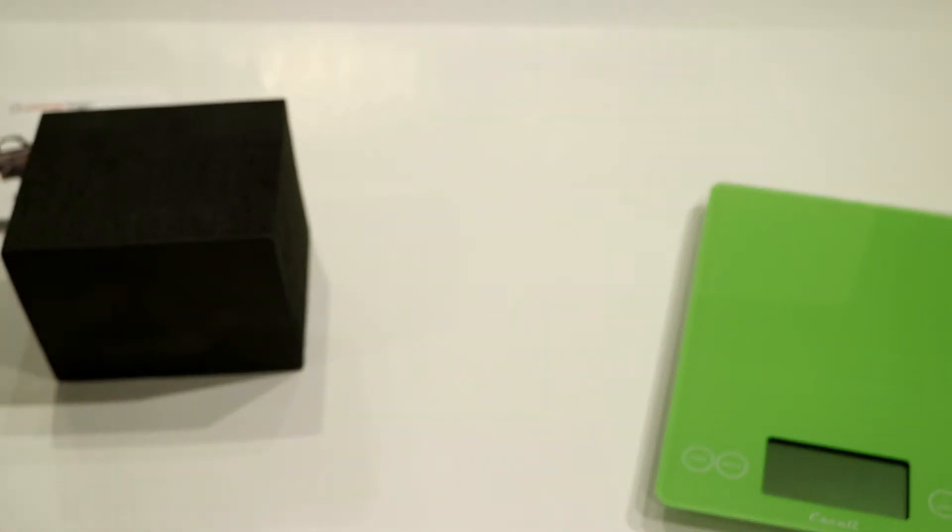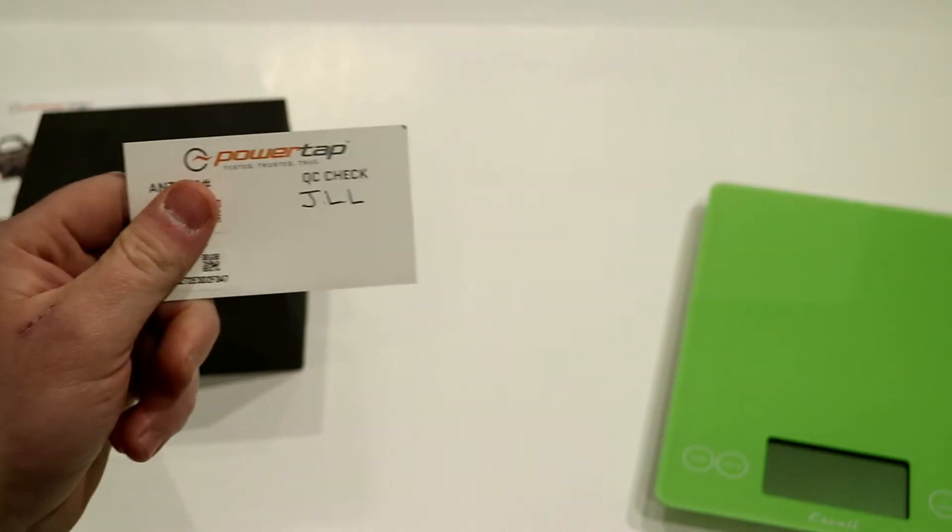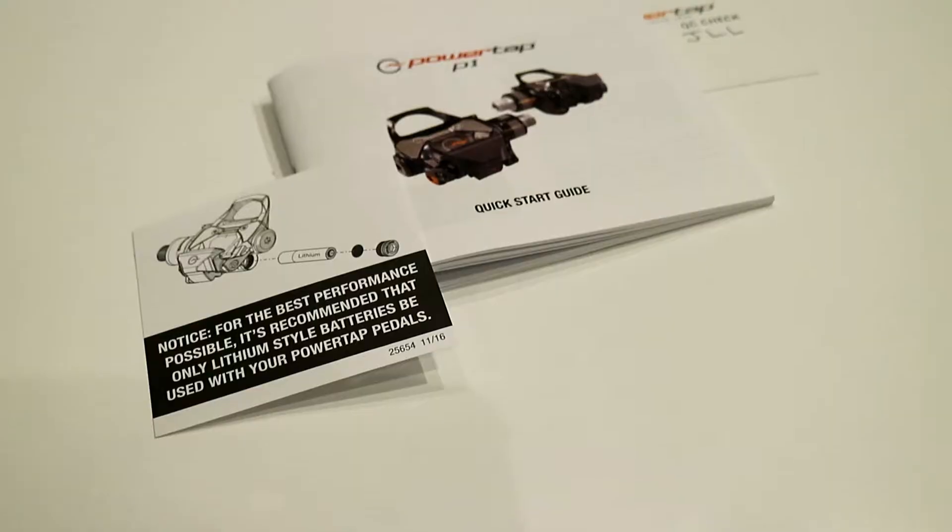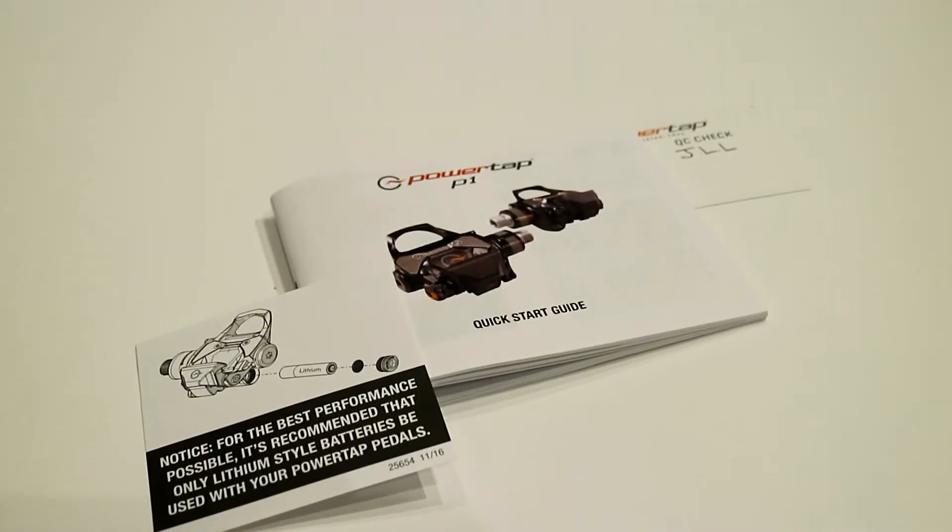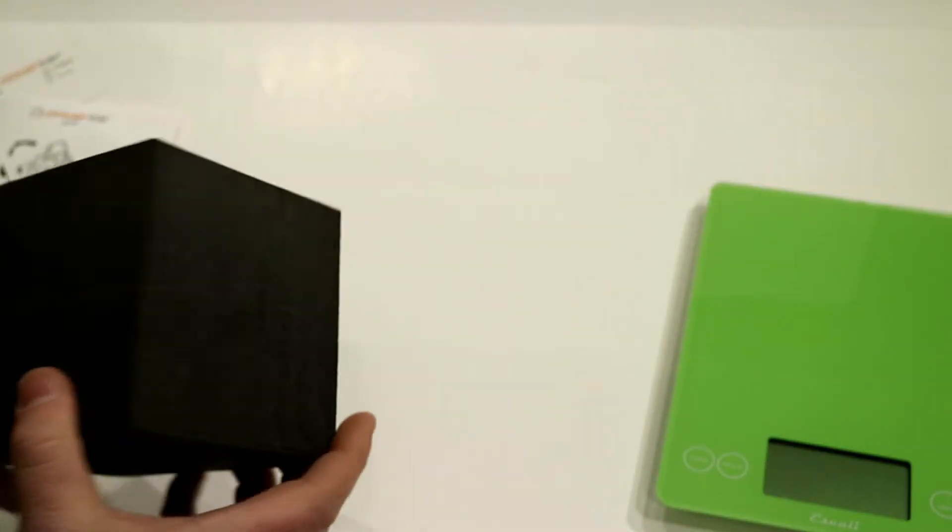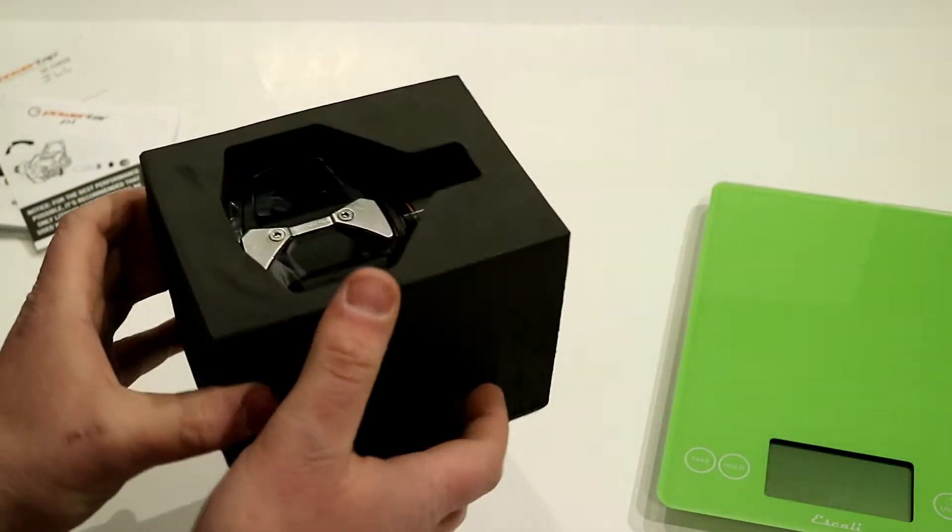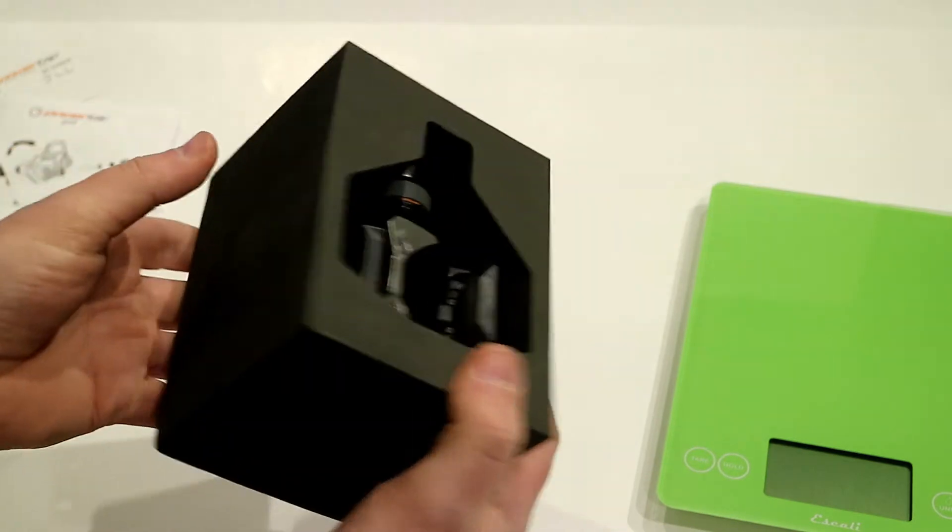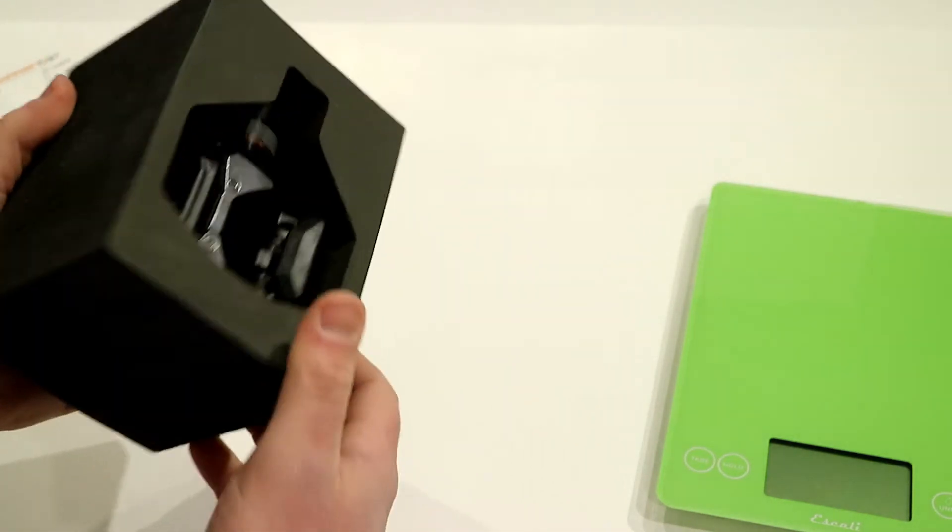You're also going to get both the ANT ID as well as the serial number for the power pedals and then a quick little description of how to install the batteries. Now the box that it comes with has this nice foam packaging to make sure that the power pedals are kept in great shape.